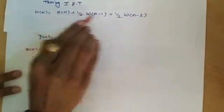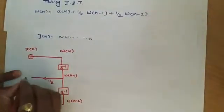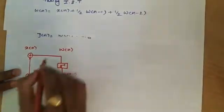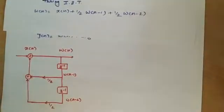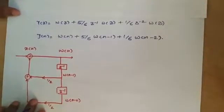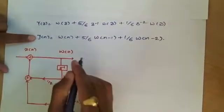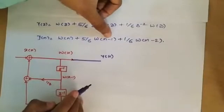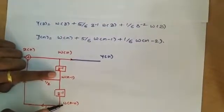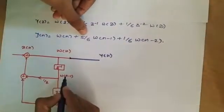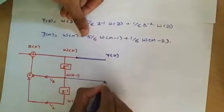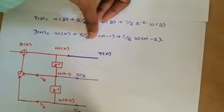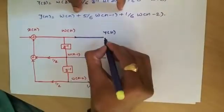For addition we need two adders — a first adder and a second adder — combining these terms to produce w(n). This completes the all-pole system. Now for the all-zero system: y(n) equals w(n), so we extend the same line as output y(n). The terms w(n−1) and w(n−2) are already available from the delay elements. w(n−1) is multiplied by 5/6 and w(n−2) is multiplied by 1/6.